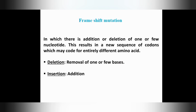Frame shift mutation is a type of point mutation in which there is addition or deletion of one or more nucleotides. Unlike base pair substitution where only one base changes, in frame shift mutation one or more nucleotides are added or deleted — shifting the reading frame, resulting in a new sequence of codons coding for different amino acids.